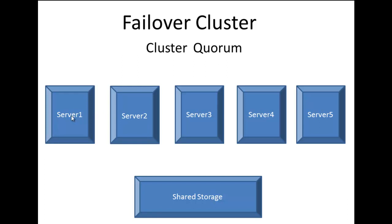If a node goes offline in the failover cluster, it's not losing any information, because the content for the failover cluster — the data — is stored in a separate, shared storage. Each node in the failover cluster has what we call a vote, and these votes determine whether or not the cluster is operational.